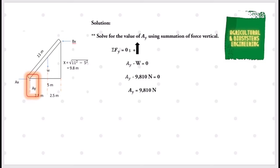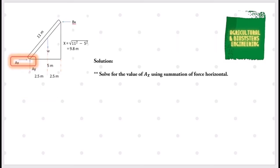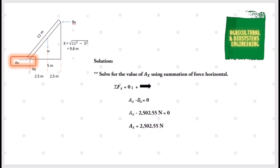Next, let us solve for Ax using the summation of horizontal forces. Summation of forces in the x-axis equals zero. Forces directed to the right are positive. We have positive Ax minus Bx equals zero. Substituting the previously solved value for Bx and transposing gives us Ax equal to 2502.55 N.